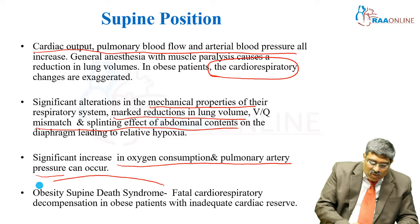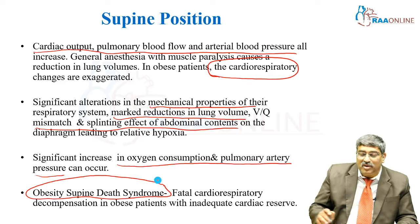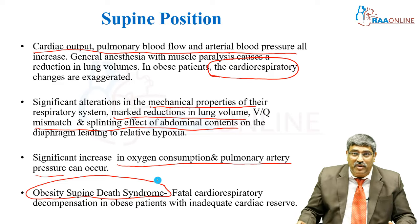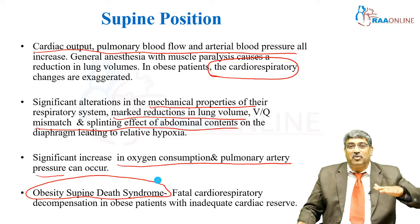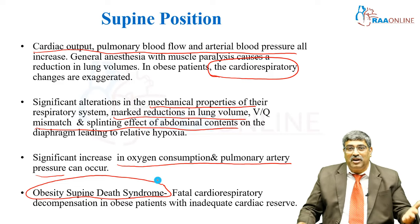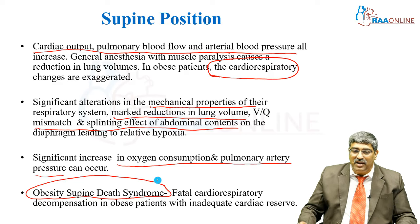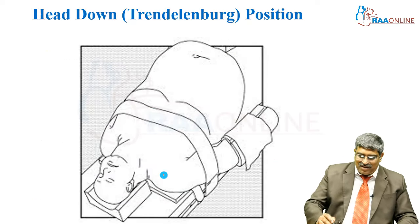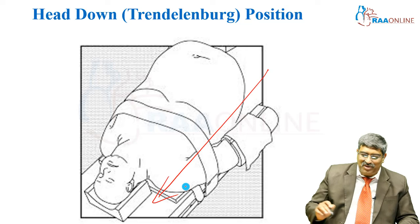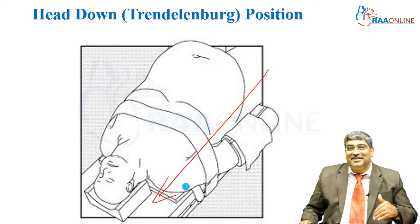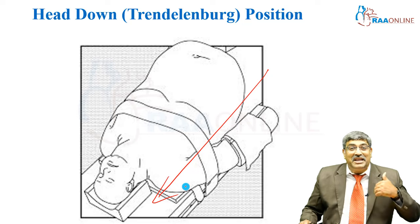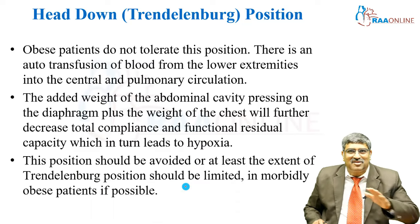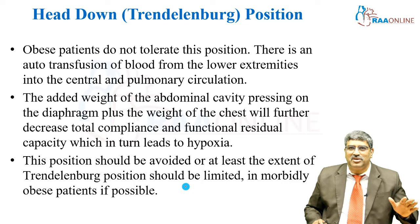There is an entity called obesity supine death syndrome, where the patient's cardiac and respiratory reserve is already limited, and when the patient lies supine a cardiac arrest can invariably happen. Coming to head-down, the Trendelenburg position — the cardiorespiratory changes are even more affected, and obese patients usually do not tolerate this position.